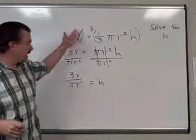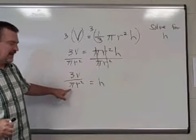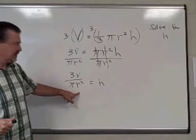So the formula for the height would be to take 3 times the volume and divide it by pi multiplied by the square of the radius. And we have solved that formula for h.